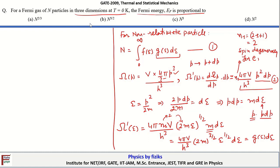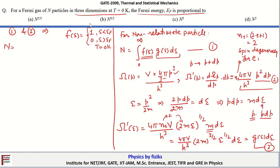Using this result (equation 3) with equation 1, note that at T = 0 the Fermi-Dirac distribution f(E) equals 1 for E less than E_F and 0 for E greater than E_F. Therefore, N equals the integral from 0 to E_F of g(E) dE, which gives N = (4 pi V / h cubed) times (2m)^(3/2) times (E_F)^(3/2) divided by (3/2).